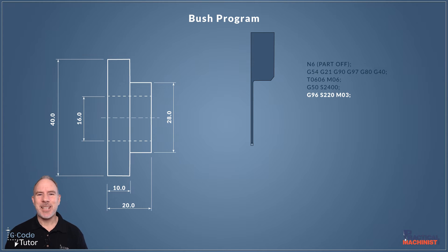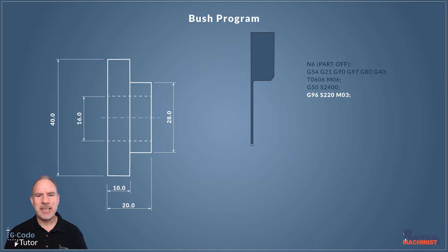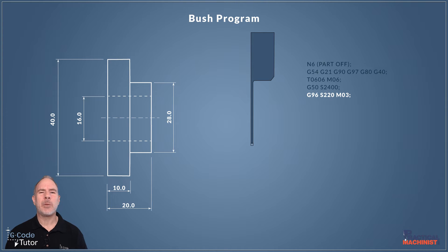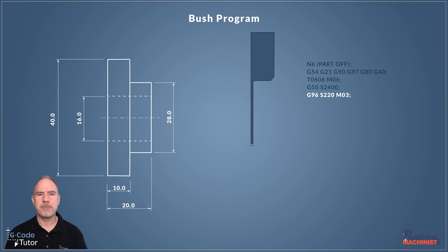We activate constant surface cutting speed with G96 and give it a value in S — this is our constant surface speed value. That's followed by M03, which turns the chuck on in a clockwise fashion. If you've got your tools loaded upside down, you might need M04 instead.